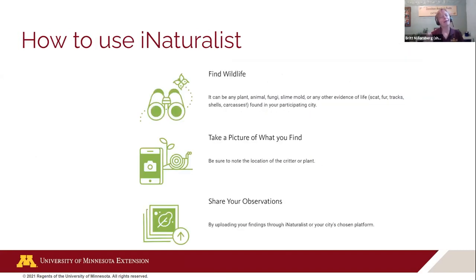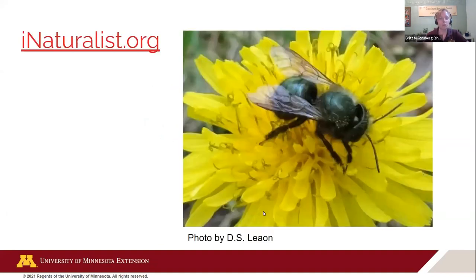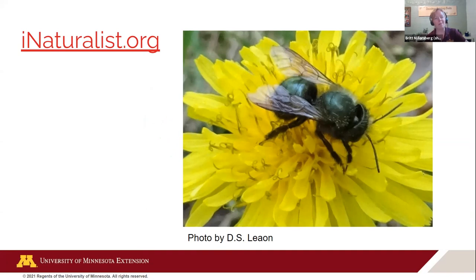iNaturalist says there are only three steps: find wildlife, take a picture, and share your observations. We're going to go into more depth because if it's not something you're familiar with, it's helpful to have more background. You can access iNaturalist from a web browser or an app — they both do the same things, but sometimes one is easier. We'll walk through this live, showing what it would be like if you're adding an observation.